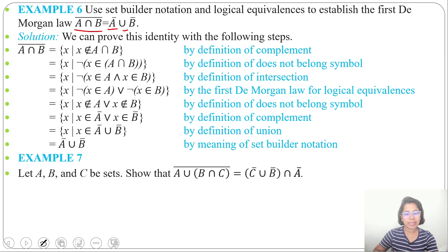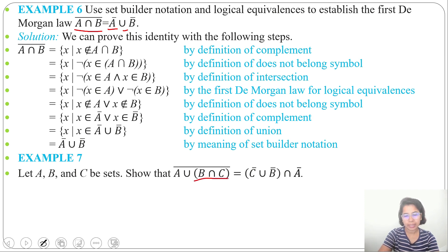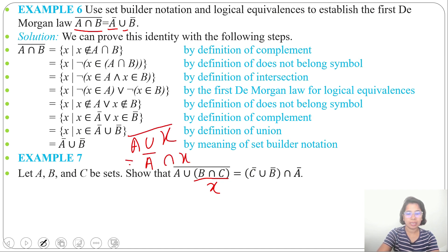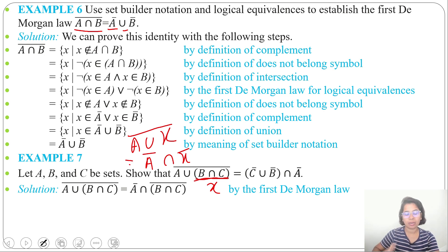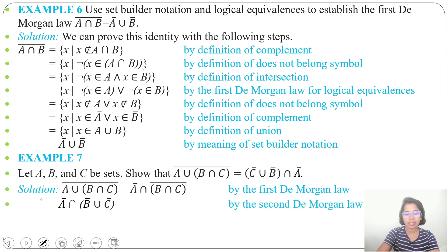Next is Example 7. Let A, B, C be sets such that (A ∪ (B ∩ C))' = C' ∪ B' ∩ A'. Let's consider B ∩ C as X. Then (A ∪ X)' = A' ∩ X' by De Morgan's law. So we write A' ∩ (B ∩ C)', again by De Morgan's law.